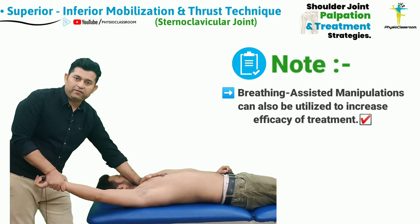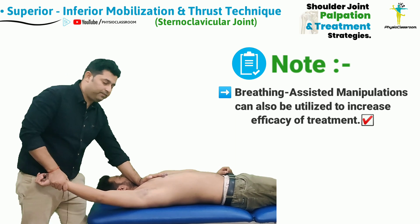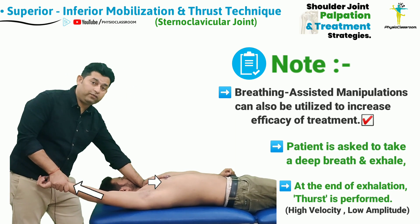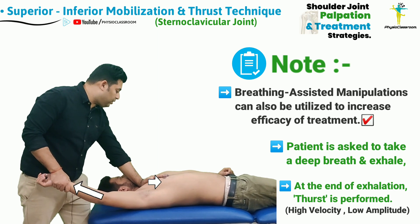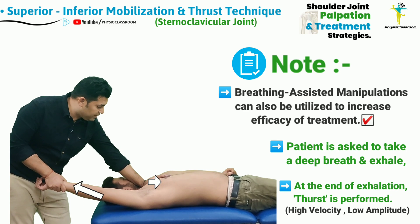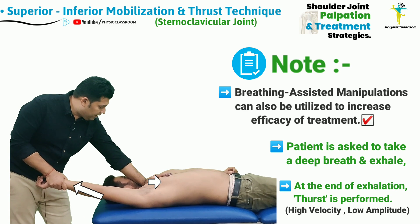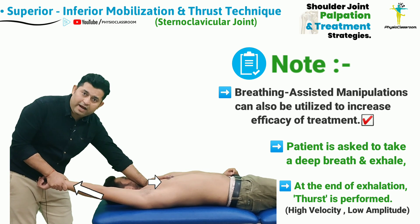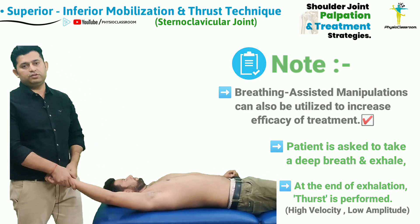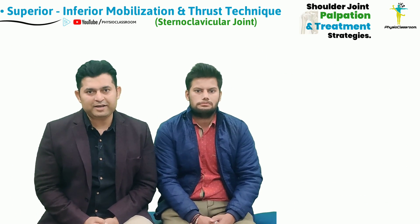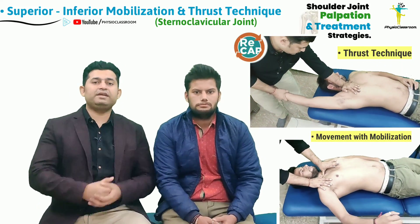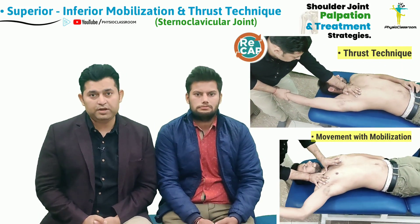Another important point to emphasize is that while delivering the thrust or manipulation for the superior to inferior glide, the therapist can ask the patient to take a deep breath after achieving the preload tension. As the patient exhales, during the end of exhalation, the therapist gives the thrust to the sternoclavicular joint.